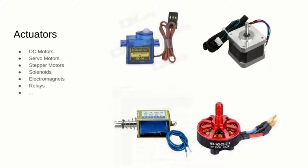Stepper motors can move a very specific number of degrees when controlled with their four-digital-pin system. They are used in machines that need to move to a very specific position, like printers, vending machines, or disc controllers. Solenoids can be controlled with a single digital signal and either retract or push a metal arm — pinball machines are full of solenoids. Electromagnets are controlled by a single digital pin and have various uses like locks or levitation. Relays are used to control high voltage by manipulating a switch with an electromagnet controlled by a low-power voltage from a microcontroller pin.